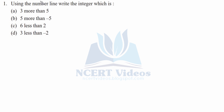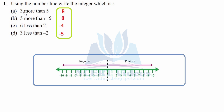Question one: using the number line, write the integer. First one is three more than five. This is your number line — this is the positive side, this is your zero, and this is your negative side. More than five, so where is your five? This is your five, and we have to add three more to it, that is plus three. So one, two, three.